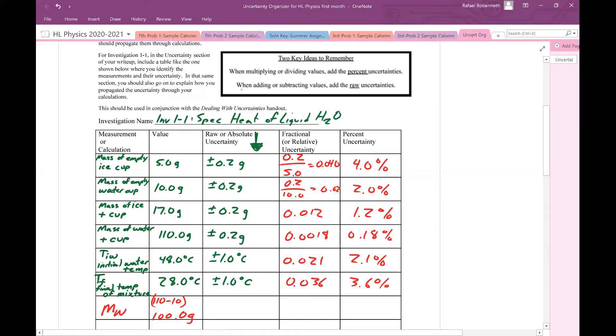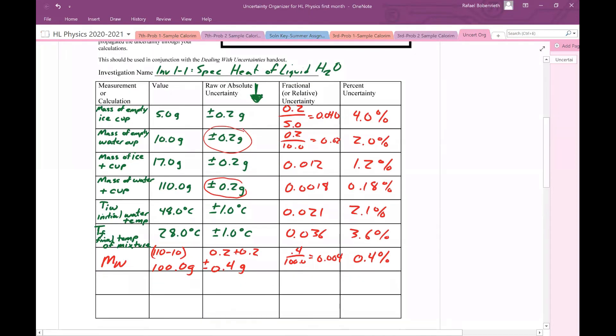When adding or subtracting values, you add the raw uncertainties. So since I subtracted these values, I have to take the raw uncertainty for the mass of the water in the cup, this one right here, and add it to the raw uncertainty of the mass of the empty water cup. So this is 0.2 plus 0.2 or 0.4 grams, plus or minus. And then from there, I'm going to calculate the next one like I always do, 0.4 divided by 100.0, so that would be 0.004. Multiply that by 100, and I get 0.4 percent.